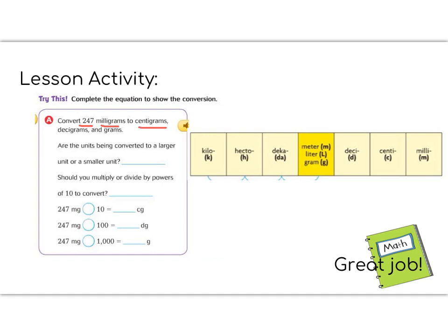So it says we're going to convert 247 milligrams to centigrams. So a milligram is here, and we want to move it to a centigram. So that means that we're going to look at a smaller unit going to a larger unit. So that means that we are going to divide. So let's do this one step at a time. First, let's think about 247 milligrams divided by 10, because that would get us to a centigram.